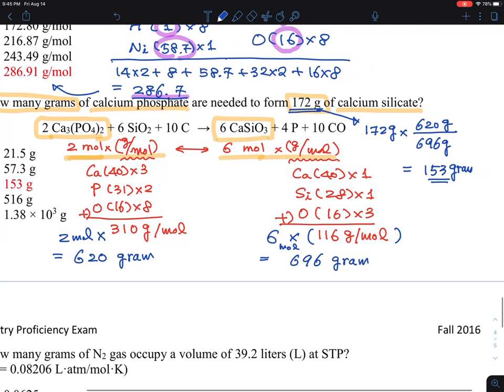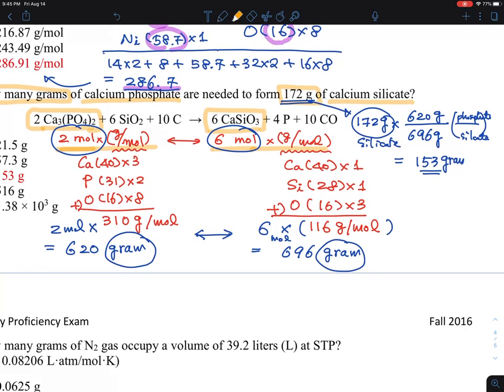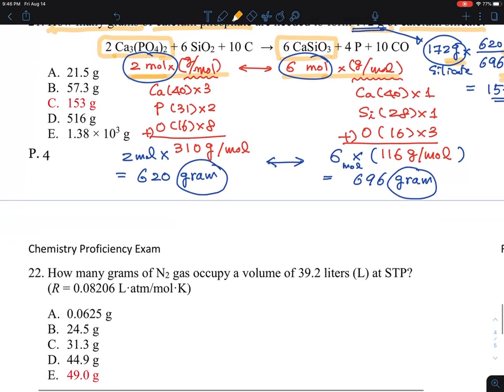Therefore, 172 gram of silicate, that's 696 grams of calcium silicate and 620 grams of calcium phosphate. If you calculate that, you will get 153 gram. So that's a unit conversion from the silicate corresponding to the phosphate mass, which is the same equivalent quantities. Now in terms of the gram, that's the ratio. In terms of the mole, 2 to 6 mole is the ratio. And what we have here is gram, so I need a gram-based ratio between phosphate and silicate.